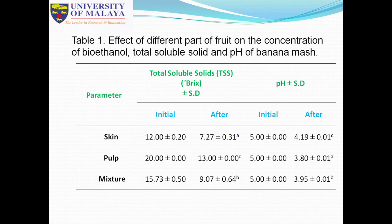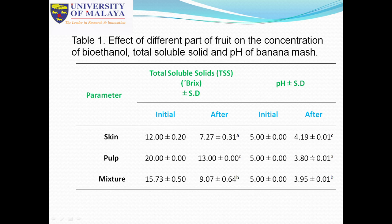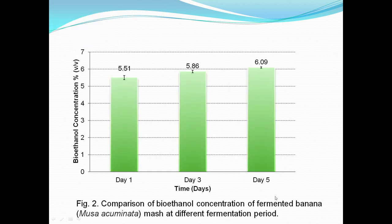For the results on banana biomass, the effect of different parts of the fruit on the concentration of bioethanol was examined using skin, pulp, and a mixture of both. Total soluble solids (TSS) were measured initial and after fermentation — the initial value was higher and reduced after fermentation. The highest TSS was found in pulp. The initial pH was around 5 for all parameters and reduced after fermentation.